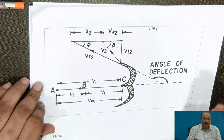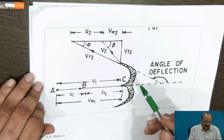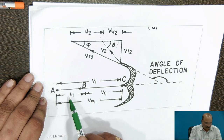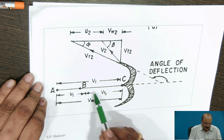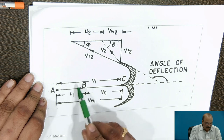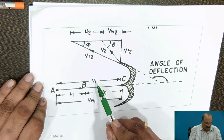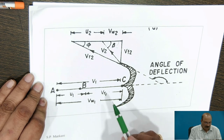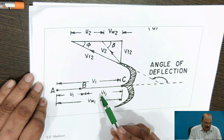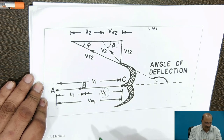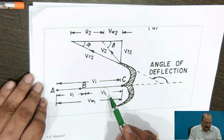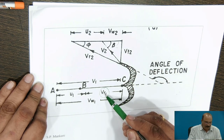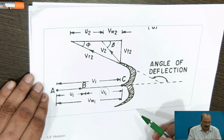Before going with the problem, we should understand the velocity diagram. At the inlet, V1 and VW1 are equal. Since V1 is given in the problem, we know that V1 equals VW1. From this, we can calculate VR1 as V1 minus U1. As per the inlet and outlet triangles for Pelton turbines, VR1 is equal to VR2.